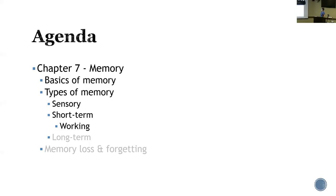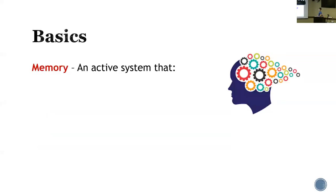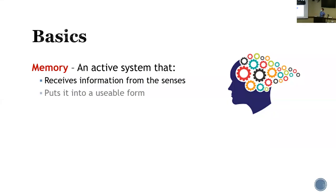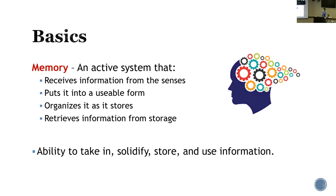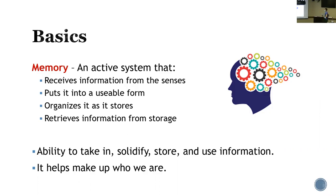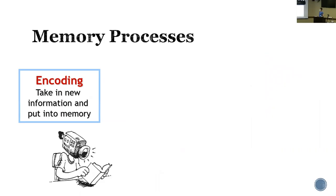Today we are starting chapter seven and we're going to talk about memory. There'll be a lot to cover. If you have any questions throughout, just let me know. Memory is an active system that receives information from the senses, puts it into a useful form, and organizes it as it stores. It allows us to retrieve information from storage. Memory gives us the ability to take in, solidify, store, and use information. This is very important — it helps make up who we are. If you lose your memory, you're not the same person anymore.